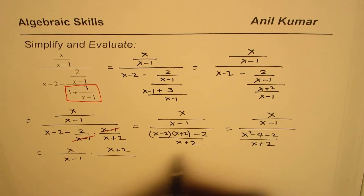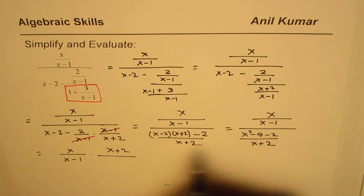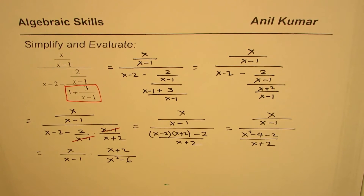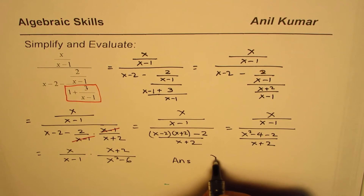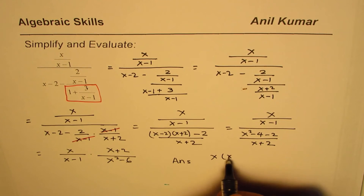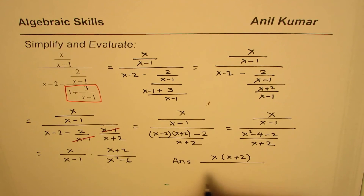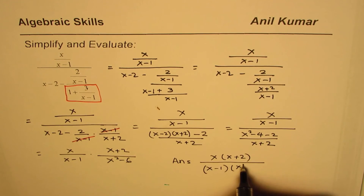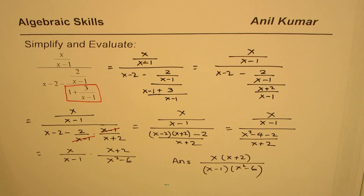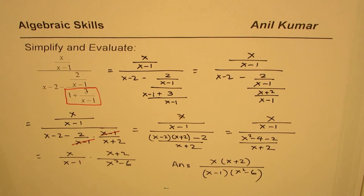x squared minus 4 minus 2 is x squared minus 6. So the simplified expression is x times x plus 2 divided by x minus 1 times x squared minus 6. That is how we simplify the given expression. I hope that helps. Thank you and all the best.